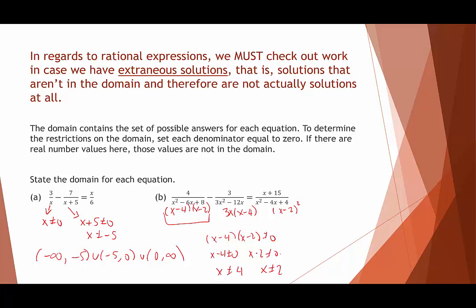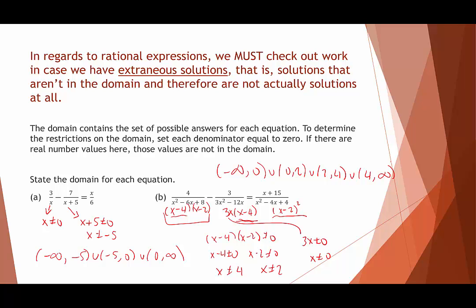The third fraction has x minus 2 squared, and x cannot equal 2 is already covered. So the domain for this example excludes 0, 2, and 4 — expressed as intervals: negative infinity to 0, 0 to 2, 2 to 4, and 4 to infinity.